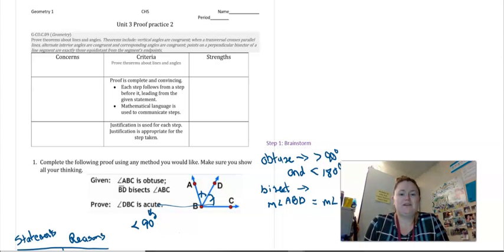Hey guys, it's Mrs. Conway. So now what I would like to do is to go over a flowchart proof. And I would like to use the same example that I used when I did the two-column proof so you can see the differences between the flowchart and the two-column proof and maybe which one would make more sense for you.